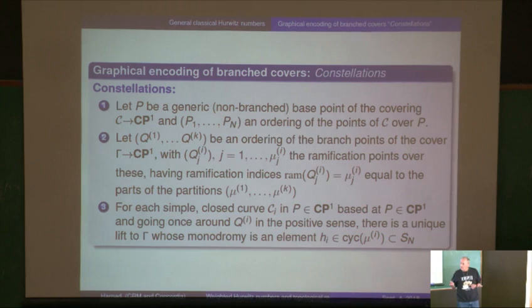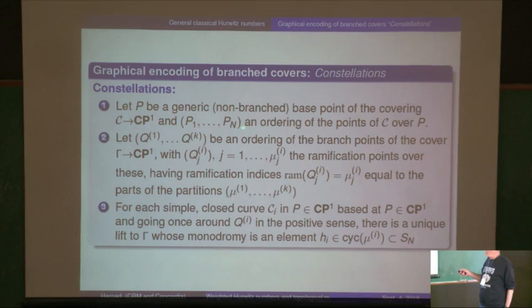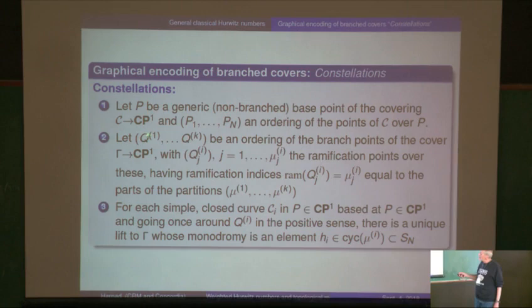The total weight added up over all constellations will be the tau function. Here's how it works: take a generic non-branching point P, take all of the distinct points in the branch covering — there will be n vertices in this constellation. Then take the branch points — k of them — and take all the ramification points over those. Give a color to each of these: red, blue, one, just to keep track. These are called star vertices, and you connect them up.